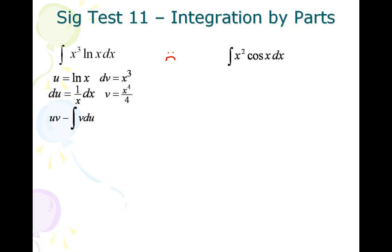Then remember the formula is uv minus the integral of v du. So uv minus the integral of v du, I have x to the 4th over 4 ln x minus...